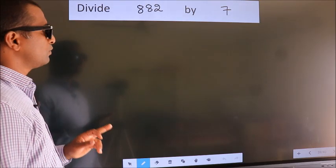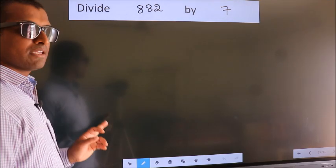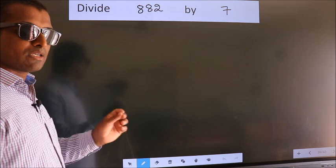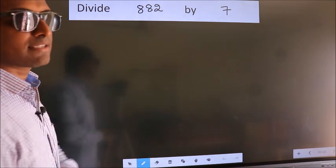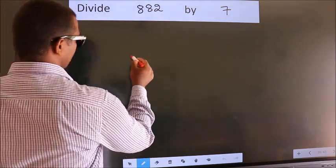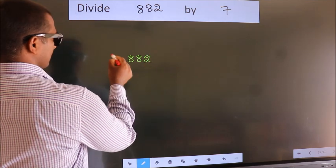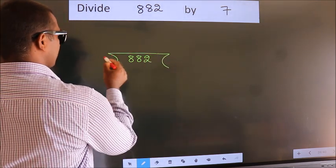Divide 882 by 7. To do this division, we should frame it in this way. 882 here, 7 here.